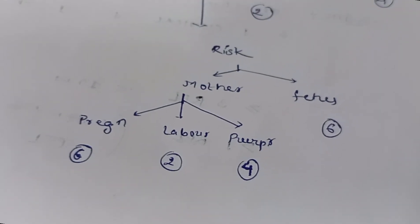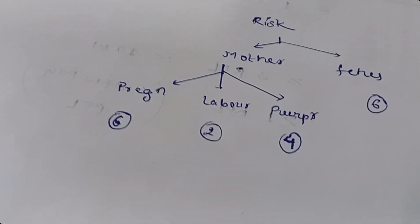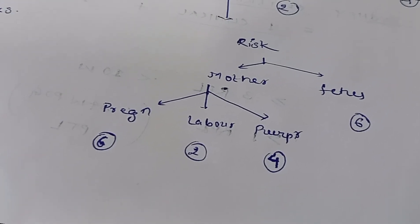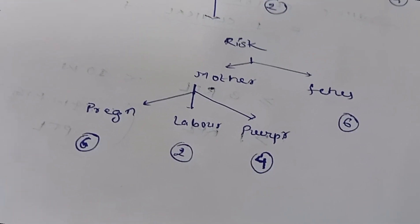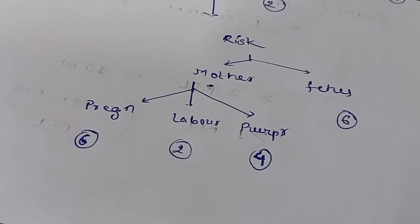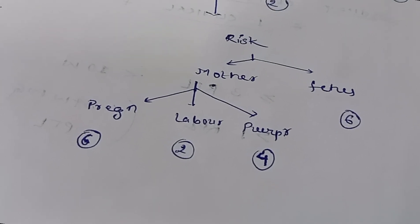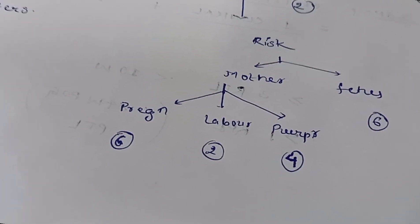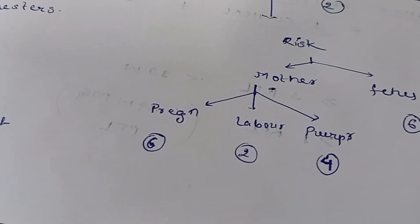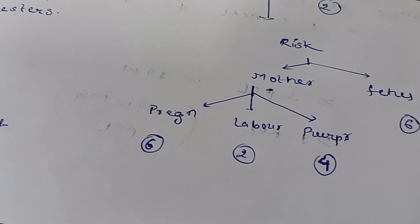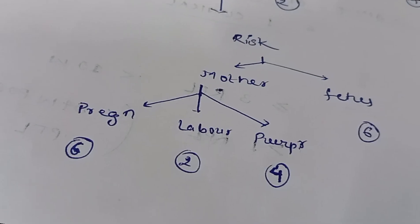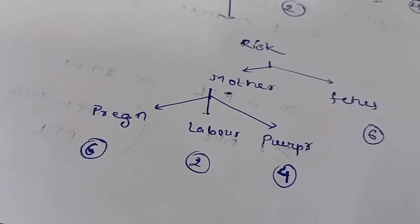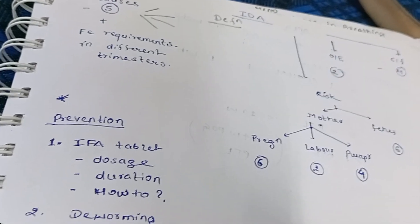During puerperium, an anemic mother can have heart failure, uterine sub-involution, lactational failure, and impaired wound healing. For the fetus, there are six complications: intrauterine growth restriction (IUGR), low birth weight, preterm birth, increased chances of infection, the baby being anemic, and impaired cognitive function or impaired brain development.